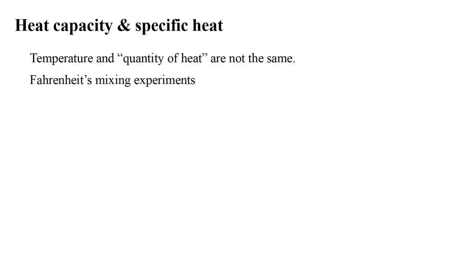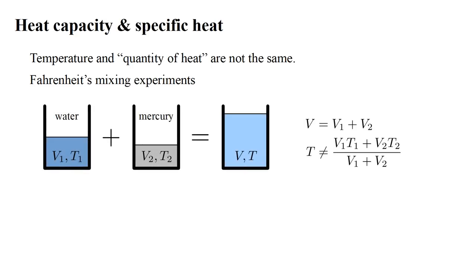This became clear in Fahrenheit's mixing experiments. He observed temperature changes when different substances were mixed. For example, a volume V1 of water at temperature T1, mixed with a volume V2 of mercury at temperature T2,